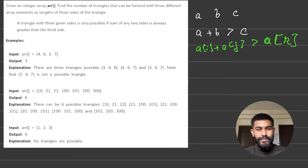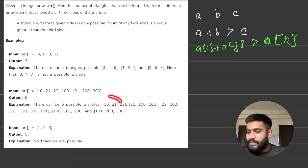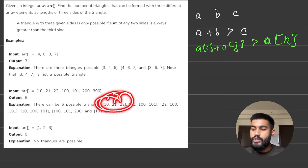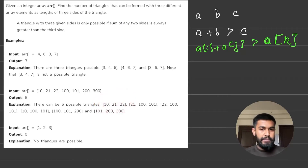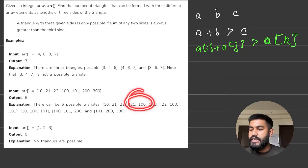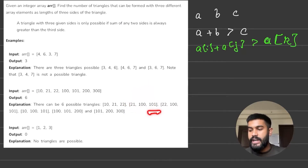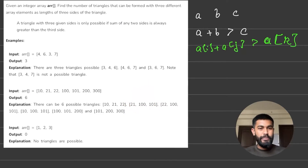Looking at the second example: 21 plus 10 equals 31, which is greater than 22, so a triangle can be formed. Then 121 is greater than 101, so again we can form a triangle here.